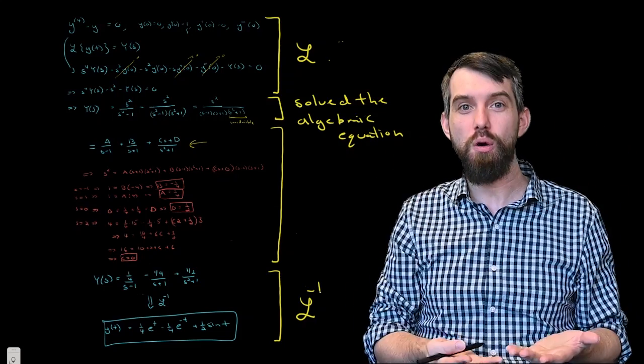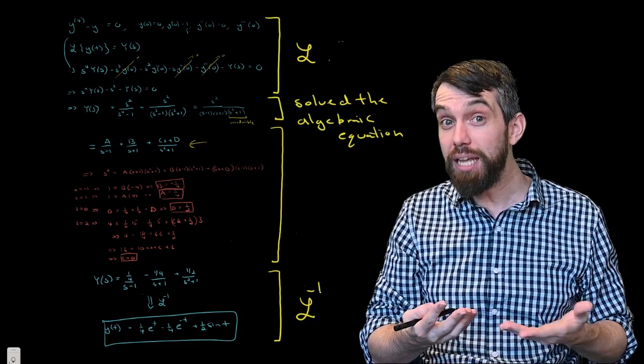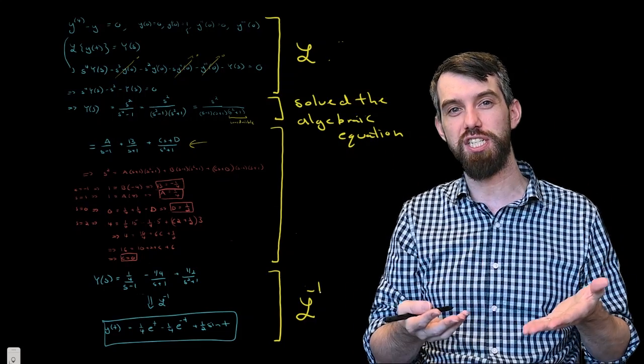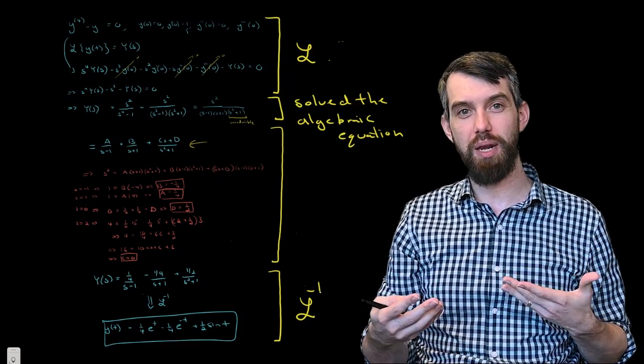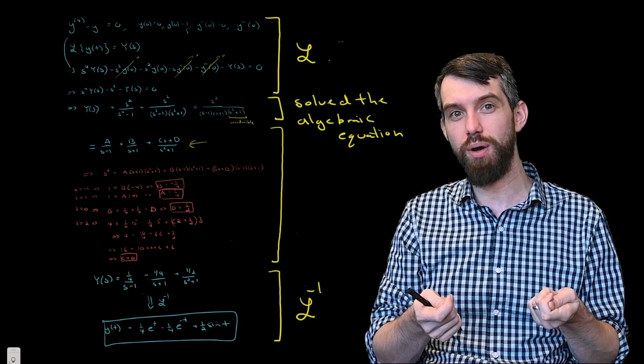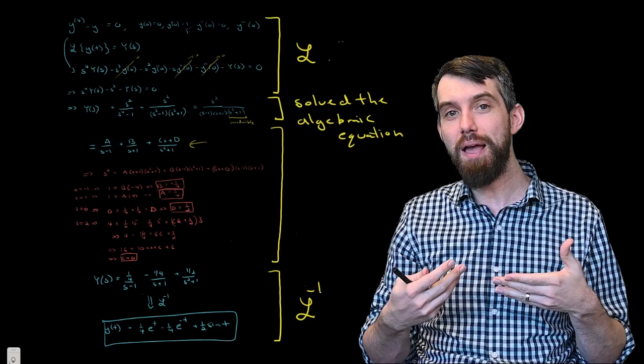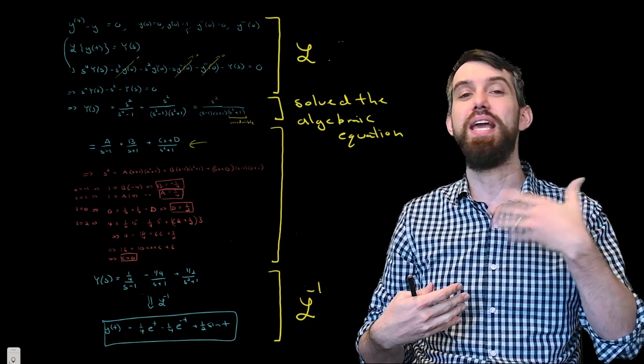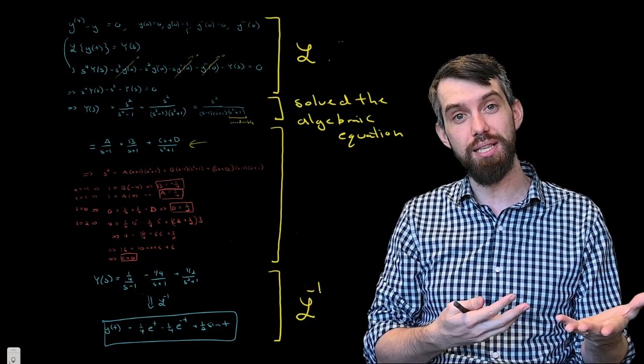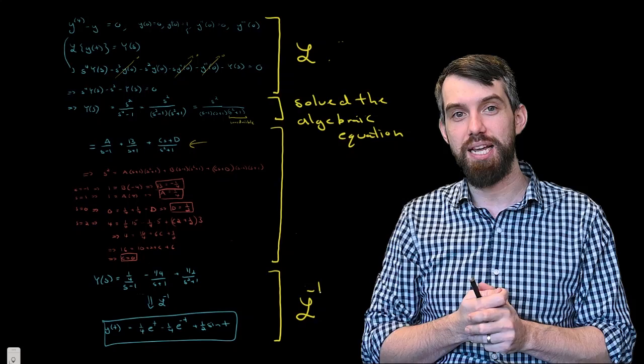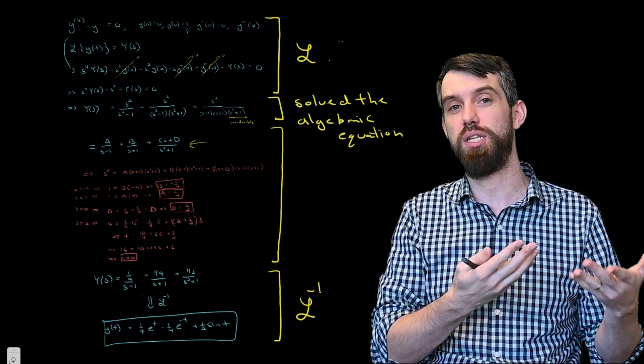The next portion was a long portion where I did a bunch of algebraic manipulations. In this specific case, it was partial fractions. And the goal of that algebraic manipulation was to take the solution to the algebraic equation and write it in a format that was compatible with me taking the inverse Laplace transform easily. And then after it was written in this nice manner, I went and computed the inverse Laplace transform.